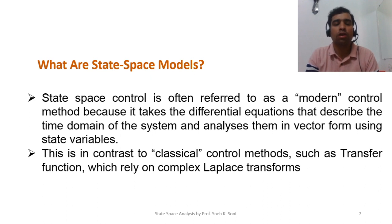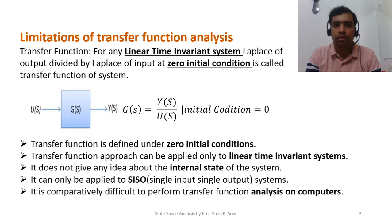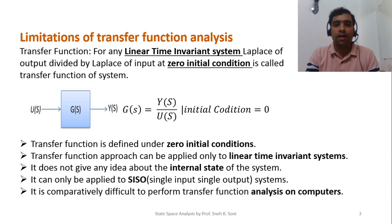There are various limitations of transfer function. Transfer function, as per basic knowledge, is the Laplace of output by Laplace of input for any linear time-invariant system at zero initial condition. In the definition itself there are two limitations: first, it can only be applied to linear time-invariant systems, and in the physical world not all systems satisfy this condition. So transfer function is not applicable to non-linear or time-variant systems, and it also assumes zero initial condition.